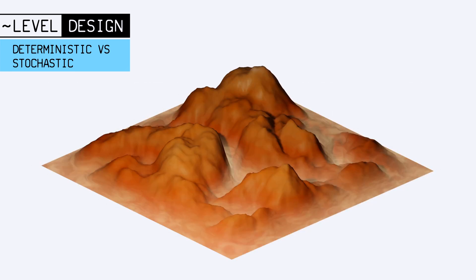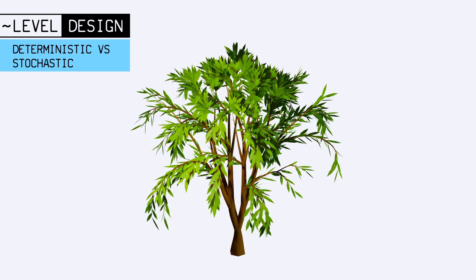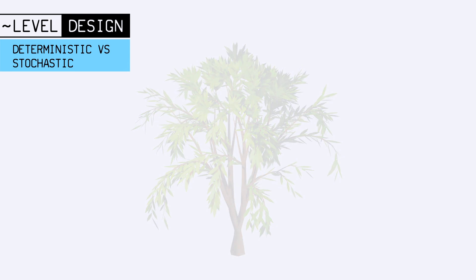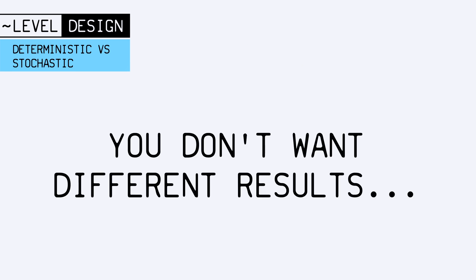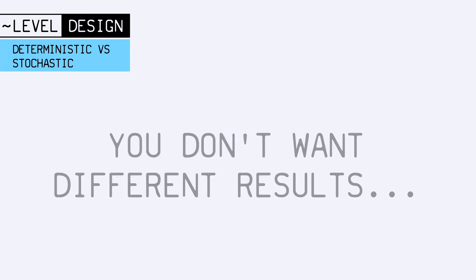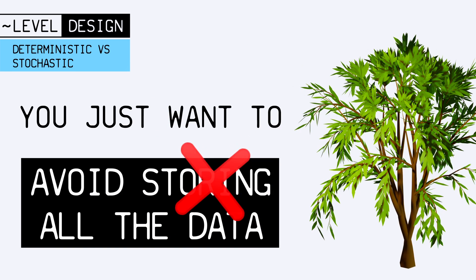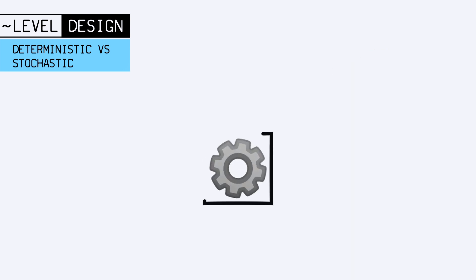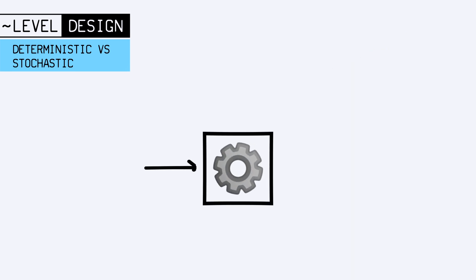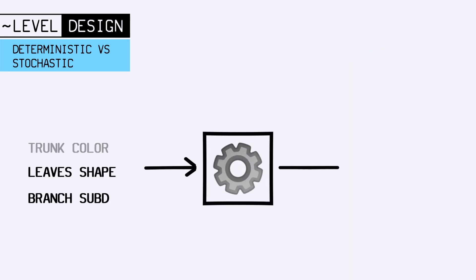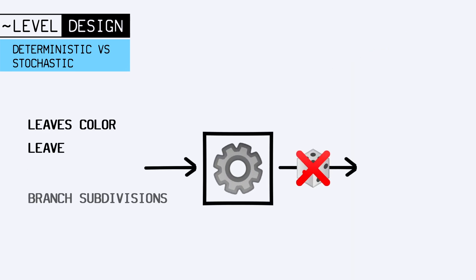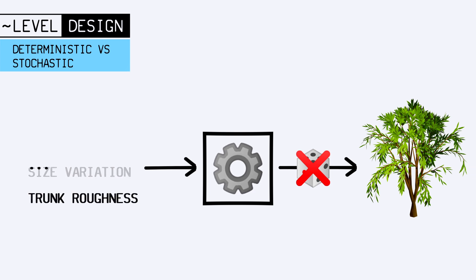Typically, consider the creation of a landscape or a tree. In both cases, there could be situations where you don't want to get a different result each time. You just want to avoid storing all this 3D data somewhere on disk, and rather generate it only when needed. So you could devise algorithms that take in particular inputs and then run deterministically to get you your result.